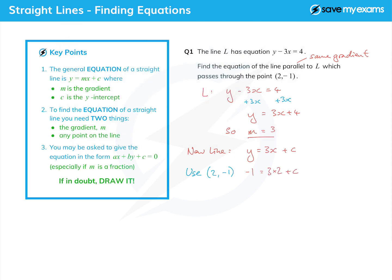3 times 2 is 6. I want the c on its own, so I'm going to subtract 6 from both sides, and I get minus 7 is equal to c, or c equals minus 7 if you prefer. And so finally I can write down that my new line is y equals 3x minus 7, that's the plus c, and that's that.